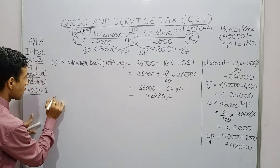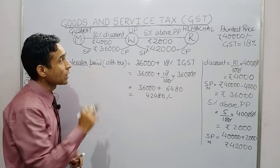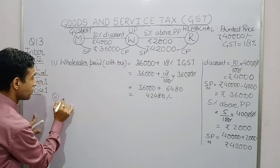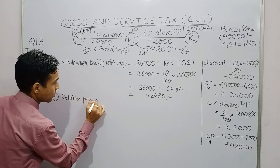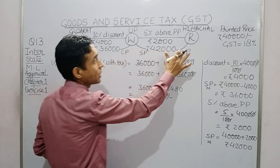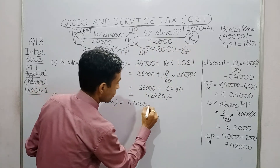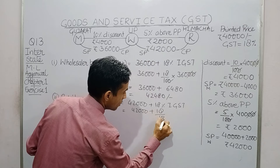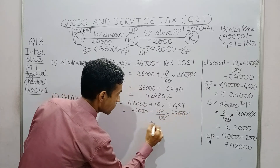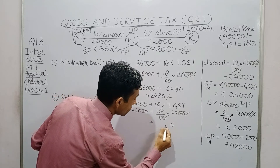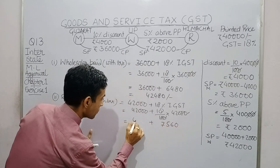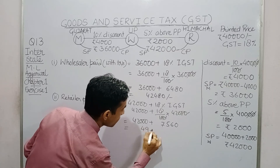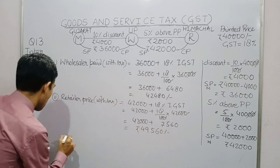In the second part, we have to find the amount paid by the retailer to the wholesaler inclusive of tax. Here the cost price is ₹42,000. We apply 18 percent IGST, which goes to the center. The amount paid by the retailer to the wholesaler inclusive of tax is ₹49,560 rupees.